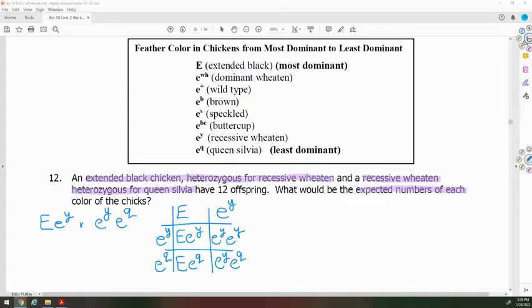We have two dominant offspring. Both contain a capital E, so they're both extended black. In lowest terms, that's one out of two. So one half of the Punnett square indicates that half their offspring will be extended black.